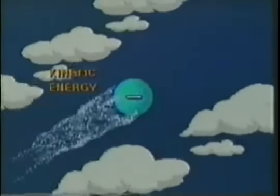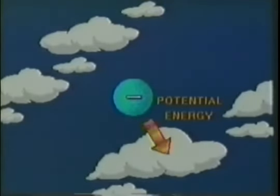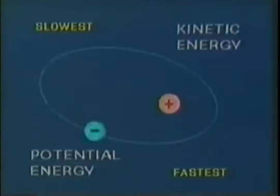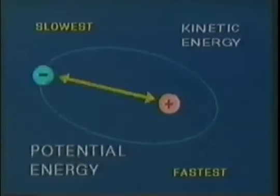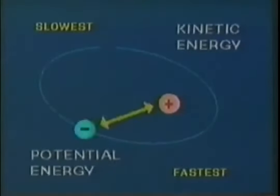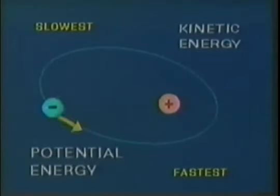Since the electron is in motion, it possesses kinetic energy in addition to potential energy. It was reasoned that as well as a circular orbit, an electron could also follow an elliptical orbit. In an elliptical orbit, the electron does not travel at a constant speed, but goes faster when it is near the nucleus and slower when it is far away. The kinetic and potential energy both change as an electron goes around the nucleus in an elliptical orbit. The distance from the nucleus is constantly changing, and the speed of the electron is also constantly changing.